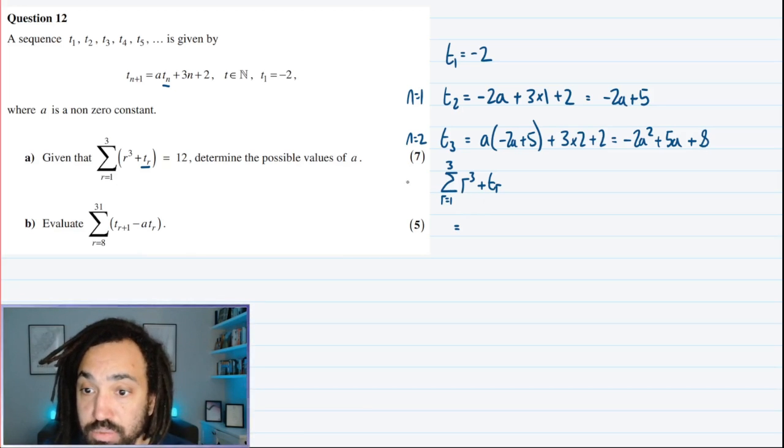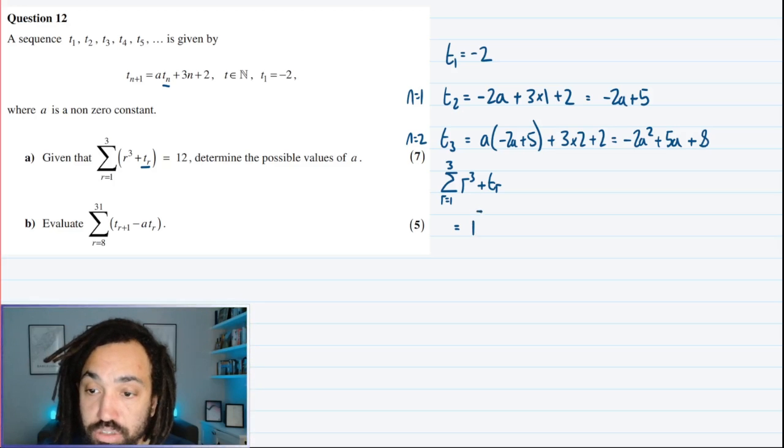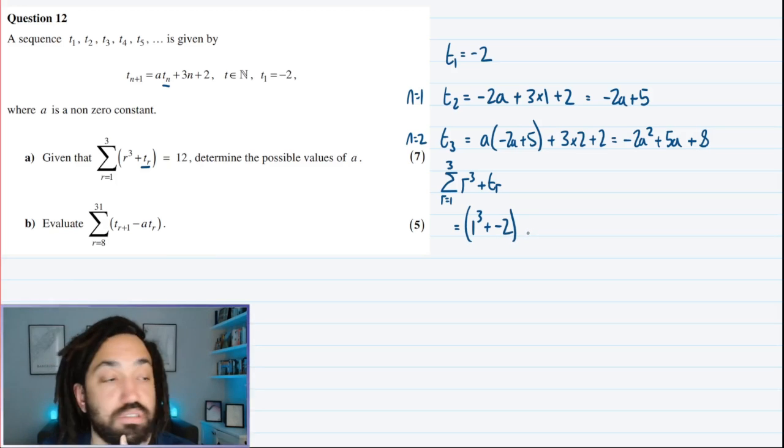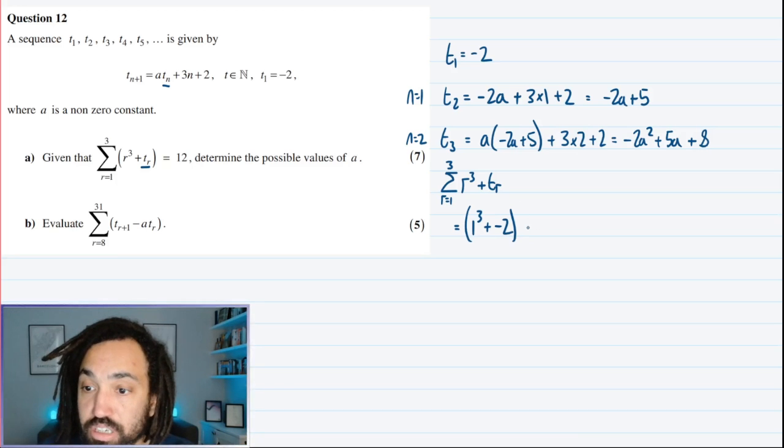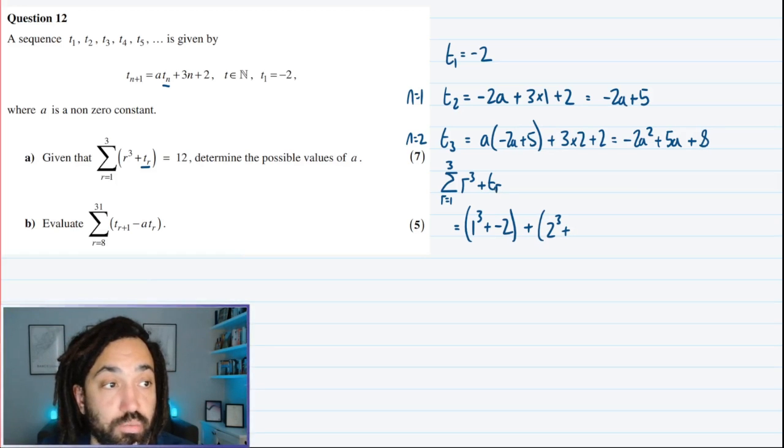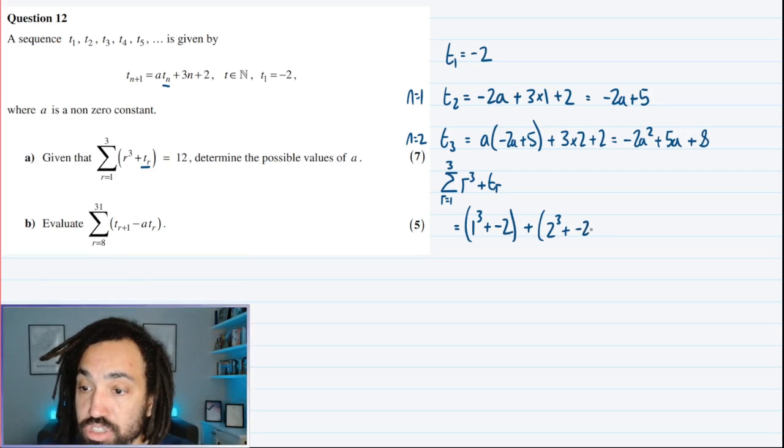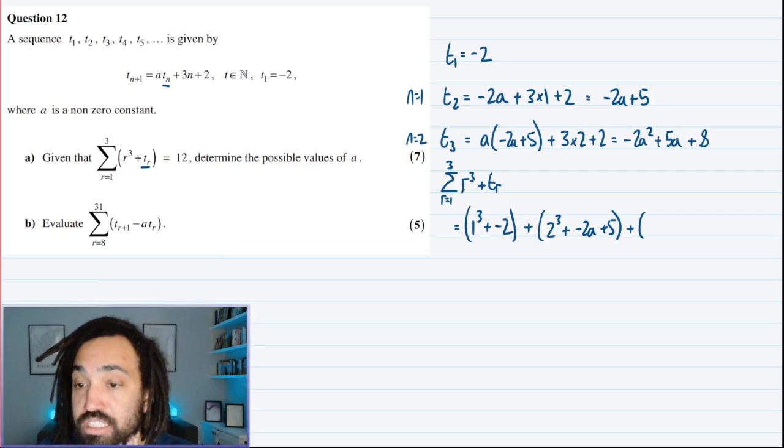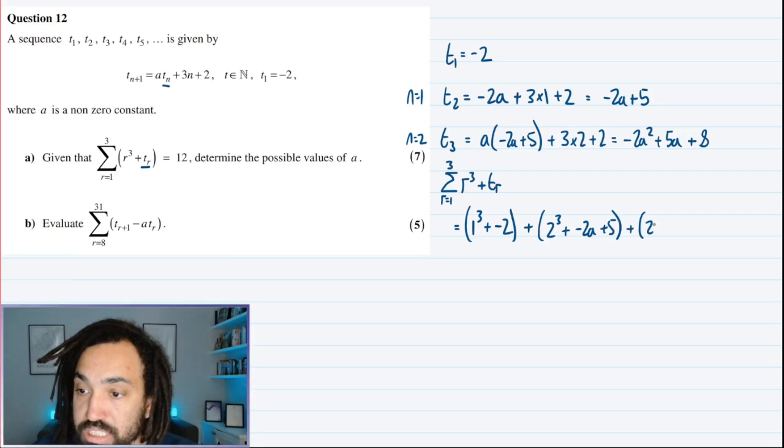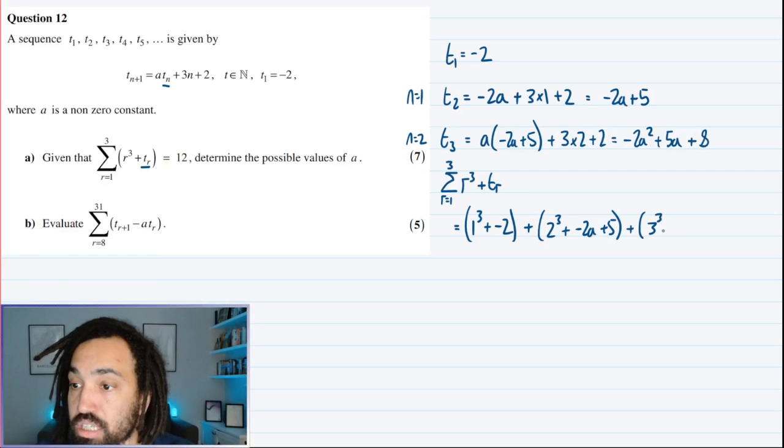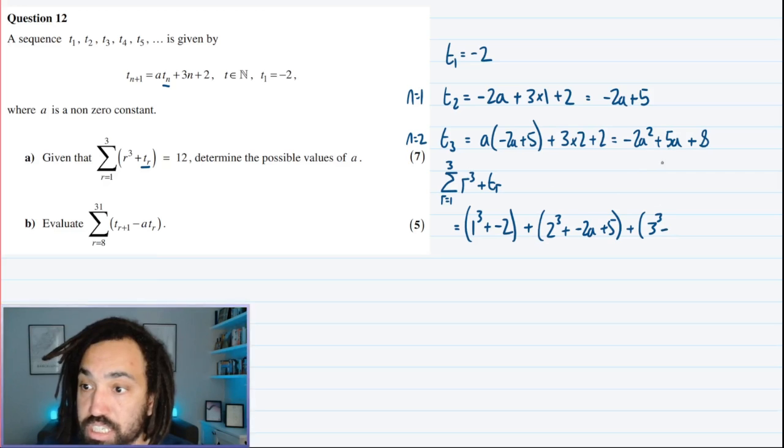So when my first term is when r is equal to 1, that's going to give me 1 cubed plus t1, which we know is minus 2. Now let's try when r is 2. So I'm going to get 2 cubed plus t2, which is minus 2a plus 5. And then when r is 3, I'm going to get 3 cubed, which is 27, and then plus t3, which is minus 2a squared plus 5a plus 8. And we're told that equals 12.